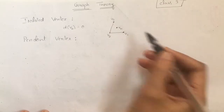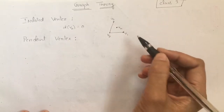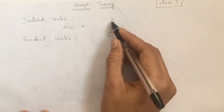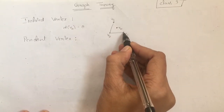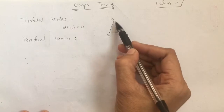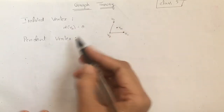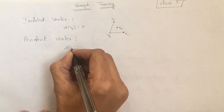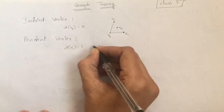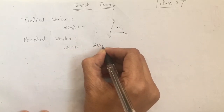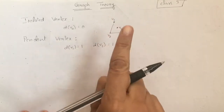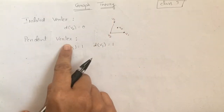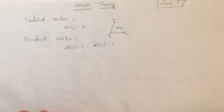Next is pendant vertex. A pendant vertex is a vertex of degree 1, meaning there is only one edge incident on that particular vertex. Here vertex v1 and vertex v3 have degree 1 — degree of v1 is 1 and degree of v3 is 1 — therefore these are pendant vertices.